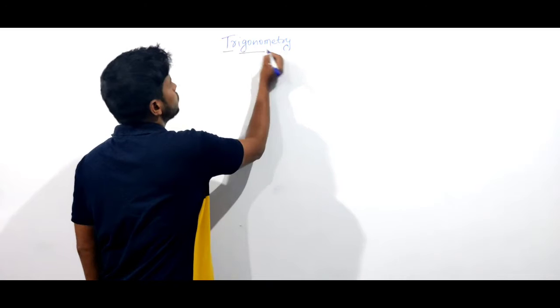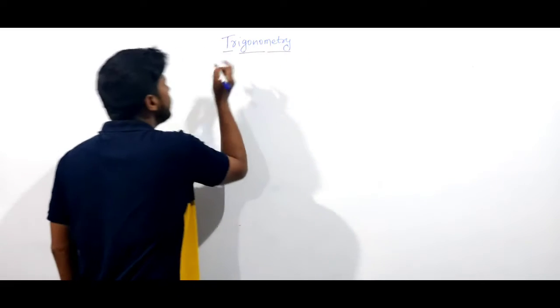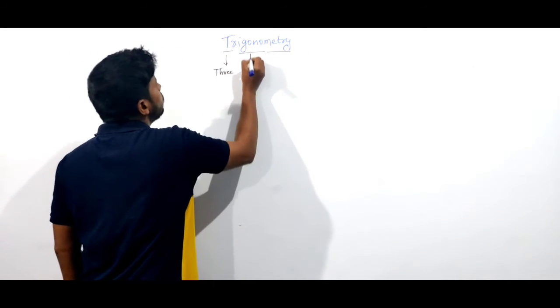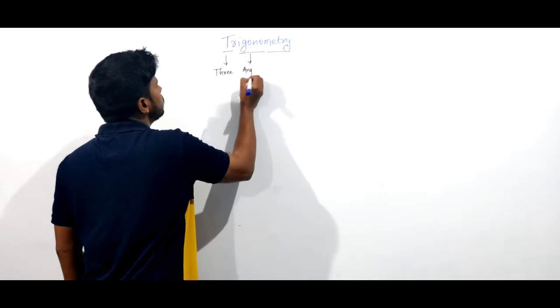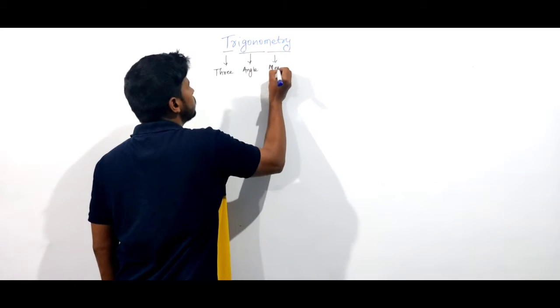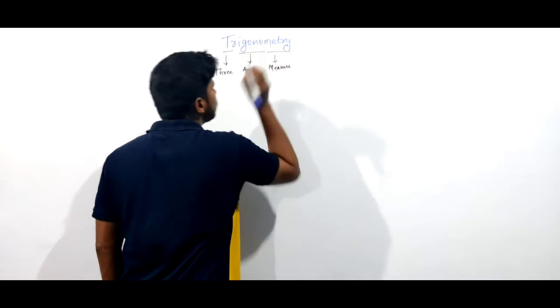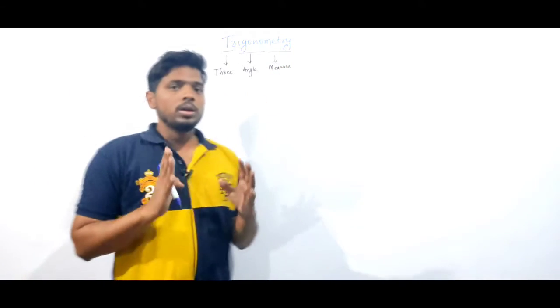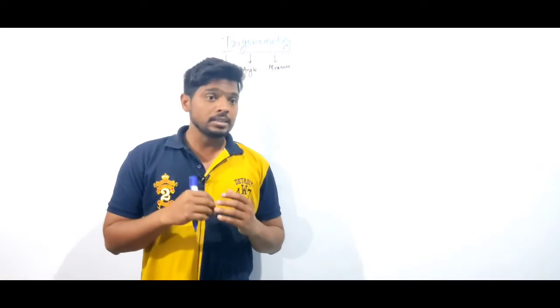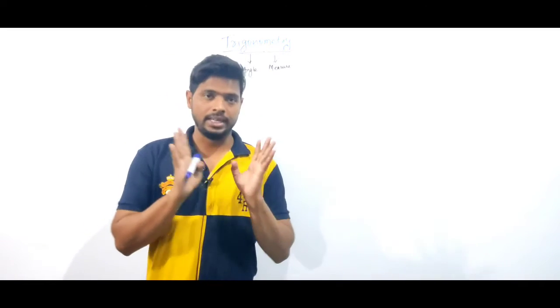First term is tri, second term is gono, and third term is metri. Tri means three, gono means angle, metri means measure. Trigonometry—it means we can see that trigonometry is the mathematics of measurement of angles.